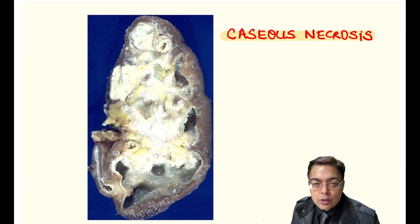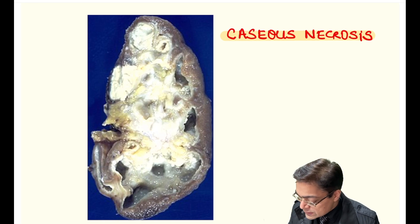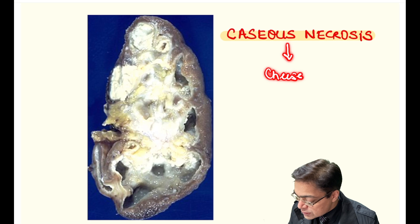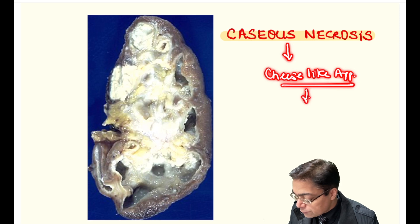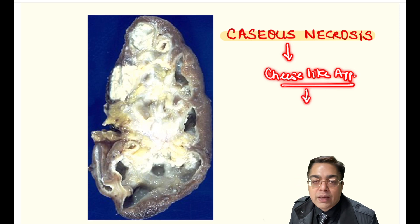This specimen of the kidney is showing the presence of caseous necrosis. Caseous necrosis, as we have talked about earlier in the main video section, is going to have the presence of a cheese-like appearance of the necrotic material. In the kidney, this gives an appearance known as a putty kidney.